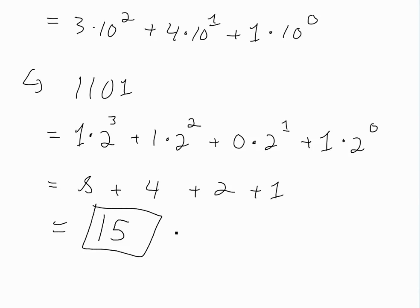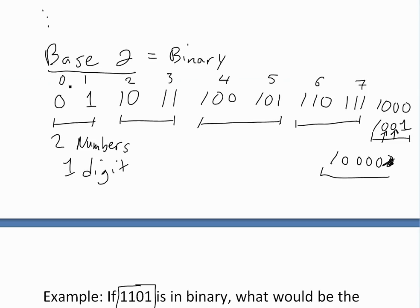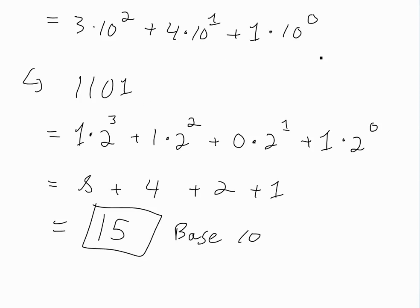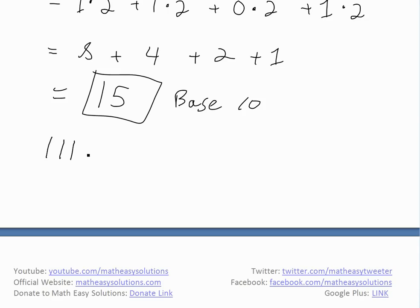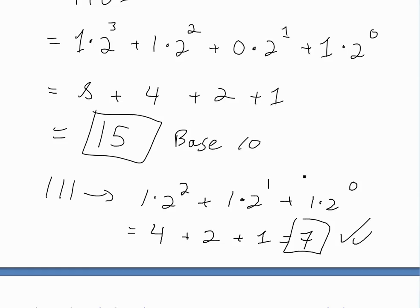So 15 in base 10 is the equivalent. Now let's verify with a number we know: 111 in binary is 7 just by counting — 0, 1, 2, 3, 4, 5, 6, 7. Let's confirm with our method: 1 times 2 to the 2, plus 1 times 2 to the 1, plus 1 times 2 to the 0 equals 4 plus 2 plus 1, which equals 7. As you can see, this is correct.